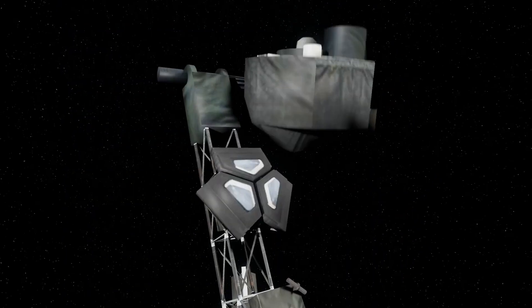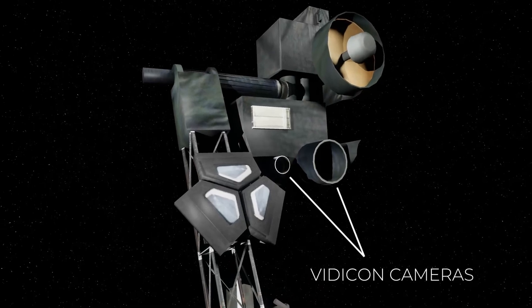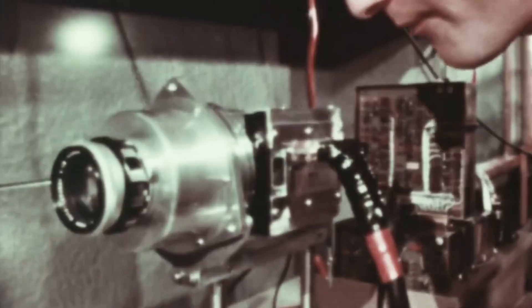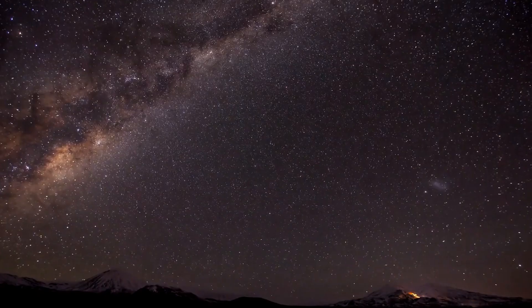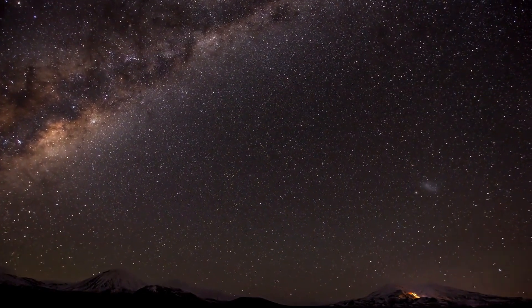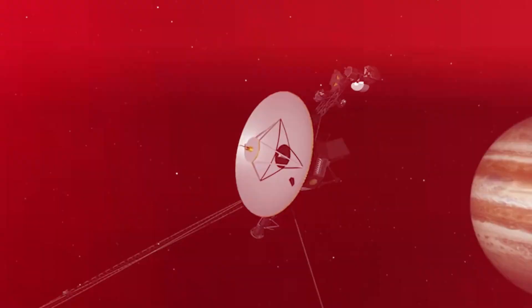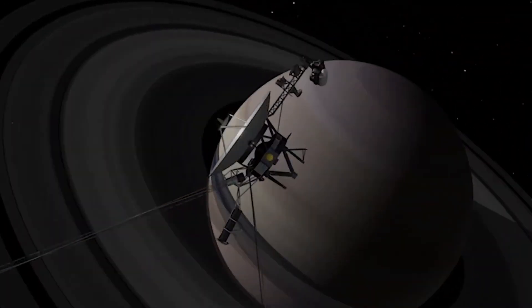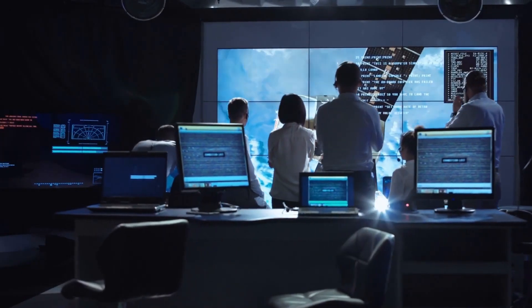The same happened with Saturn's moon Titan. The voyagers were the first to notice liquid seas on Titan, and Cassini only confirmed that 40 years later. It seemed that after five years in space, the Voyager mission came to an end. But luckily it happened otherwise. The mission was extended, Voyager 2 went to explore Uranus and Neptune, and Voyager 1 headed to the unknown moons of Jupiter.